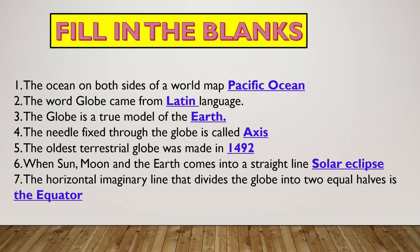When the sun, moon, and the earth come into a straight line, that is called a solar eclipse - 'surya graham' in Telugu. The sun's light is blocked by the moon, so we cannot see the sun. This happens on a new moon day (Amavasya). So that is called a solar eclipse. The horizontal imaginary line that divides the globe into two equal halves is the equator.